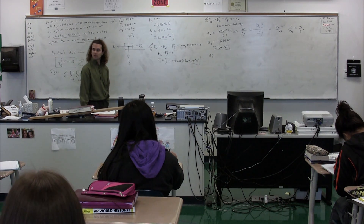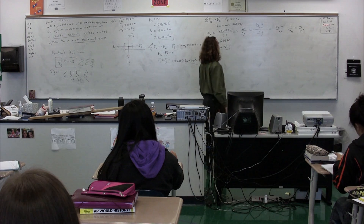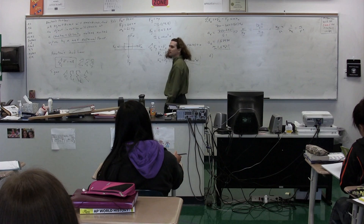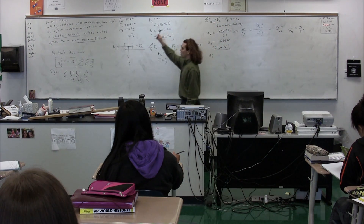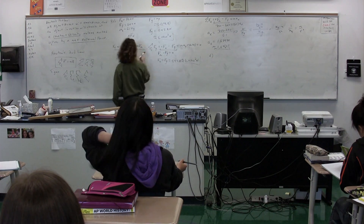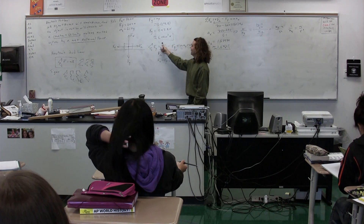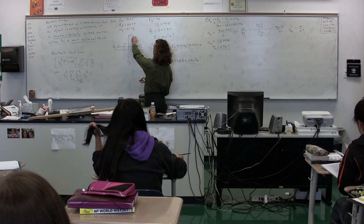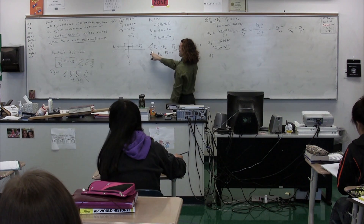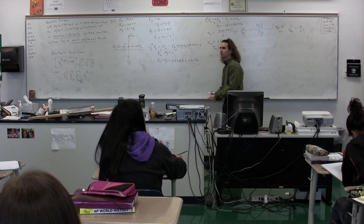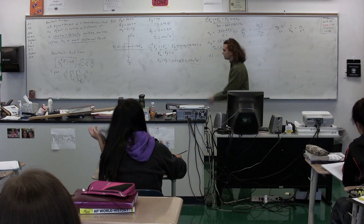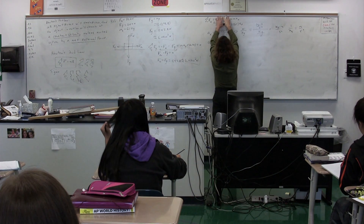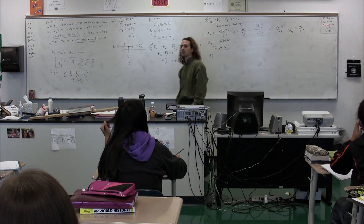The net force equals mass times acceleration. The sum of forces in the y direction — force normal minus force of gravity — is the net force, and that equals mass times acceleration in the y direction. The net force in the x direction is the force applied minus the force of friction, and that's equal to mass times acceleration in the x direction.